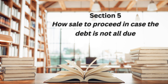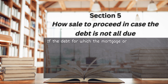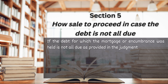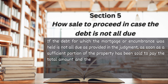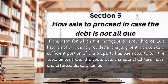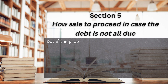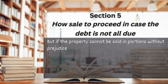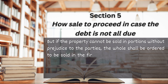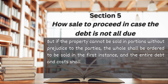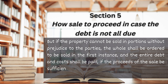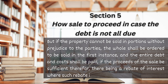Section 5. How Sale to Proceed in Case the Debt is Not All Due. If the debt for which the mortgage or encumbrance was held is not all due as provided in the judgment, as soon as a sufficient portion of the property has been sold to pay the total amount and the costs due, the sale shall terminate, and afterwards, as often as more becomes due for principal or interest and other valid charges, the court may, on motion, order more to be sold. But if the property cannot be sold in portions without prejudice to the parties, the whole shall be ordered to be sold in the first instance, and the entire debt and costs shall be paid, if the proceeds of the sale be sufficient therefor, there being a rebate of interest where such rebate is proper.